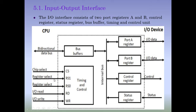There are two register select pins — RS0 and RS1. These two pins can point to up to 2² = 4 registers, so we have four registers: Port A, Port B, Control register, and Status register. We can select one register using these two pins: if they are 0-0 it selects Port A, 0-1 selects Port B, 1-0 selects the Control register, and 1-1 selects the Status register. There are also control signals indicating whether the processor wants to perform a read or write operation via this interface.